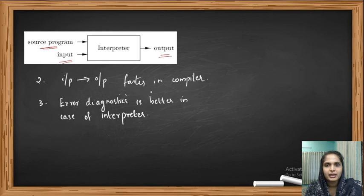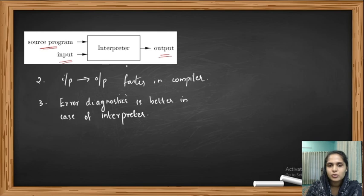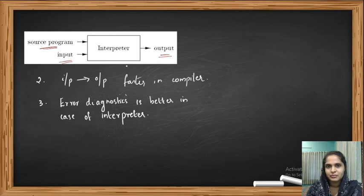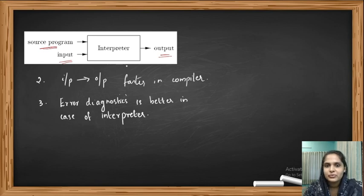So those are the differences between a compiler and an interpreter. First, the compiler works as a two-step process: it produces the target program then executes it with user input to produce output; the interpreter takes the source program and input together and produces output directly. Second, input to output mapping is faster with a compiler. Third, better error diagnostics are obtained with an interpreter. In the next video we'll be going through the next topic: analysis of a source program. Till then, bye.